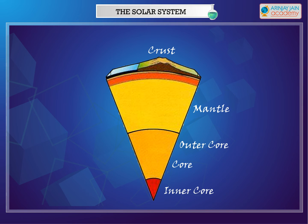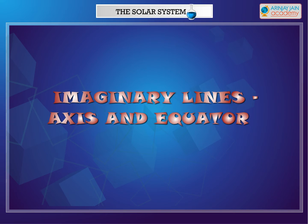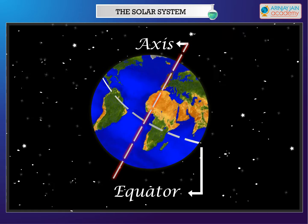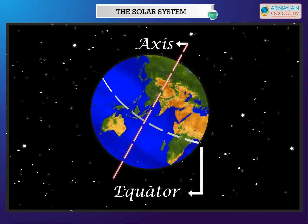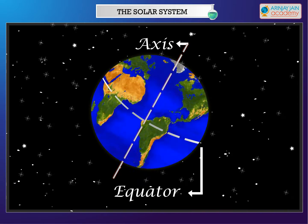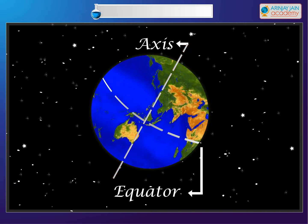The inner core is the hottest part of the Earth. The axis is an imaginary line that runs through the center of the Earth and joins the North Pole and the South Pole.